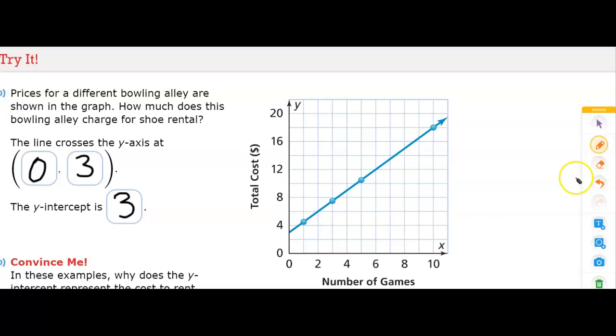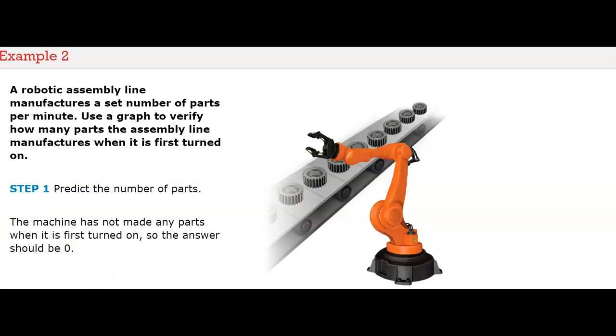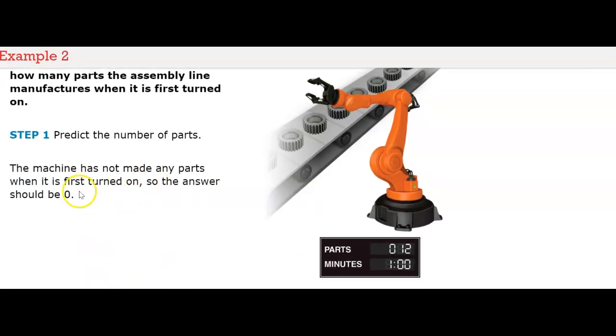A robotic assembly line manufactures a set number of parts per minute. Use a graph to verify how many parts the assembly line manufactures when it is first turned on. Step one: predict the number of parts. The machine has not made any parts when it's first turned on, so the answer should be zero.